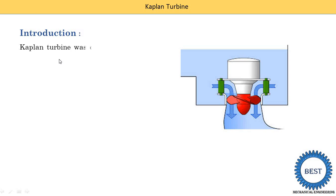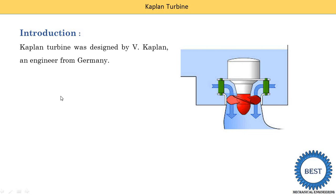The Kaplan turbine was designed by V. Kaplan, an engineer from Germany. In examinations, there is a Pelton, Francis or Kaplan turbine that is asked — any one of the three can come in any examination. First you need to draw the figures and write down the five points from the classifications. If you don't know the classification, then go to the eye symbol on the top right of your screen — from that you can watch the classifications.